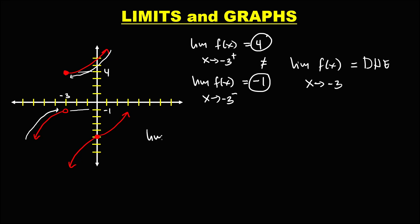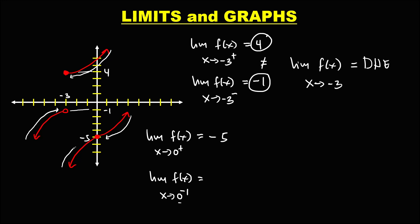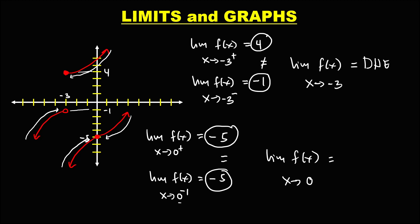For the limit of f(x) as x approaches 0 from the right, and also from the left: x approaches 0 from the right and the limit is equal to negative 5. For the left side limit, x approaches 0 from the left and the limit is also equal to negative 5. Since the right side limit equals the left side limit, therefore the limit is also equal to negative 5.